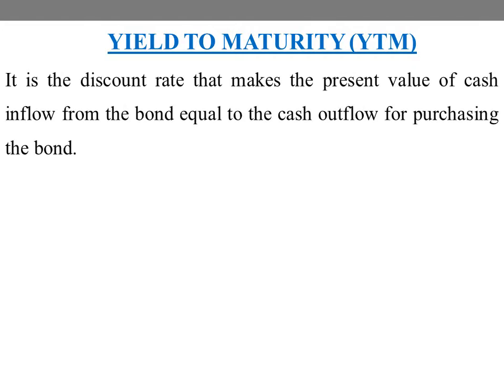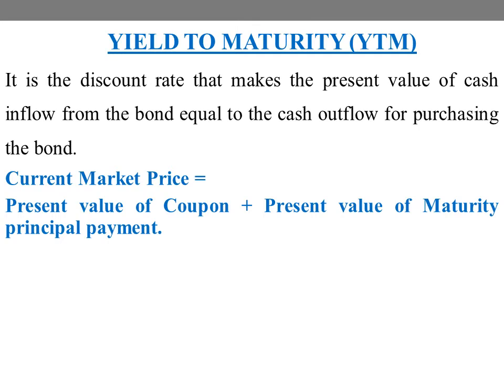Yield to maturity, as we discussed in the last class: when one bond is purchased up to the maturity period, the total rate of return is the basic yield to maturity. Or it can be defined as the discount rate that makes the present value of cash inflow from the bond equal to the cash outflow for purchasing the bond. The cash outflow is the current market price — that is the investor's outflow amount.